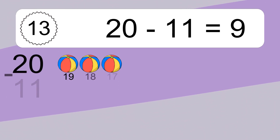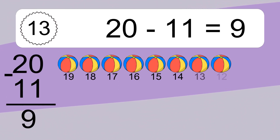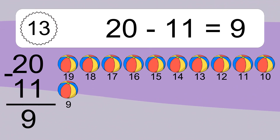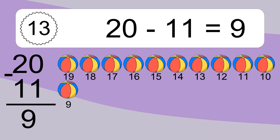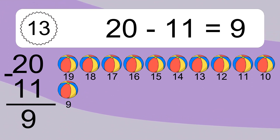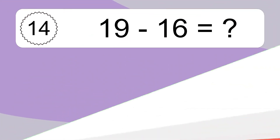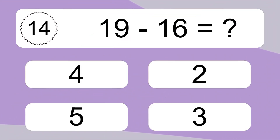20 minus 11 equals what? 20 minus 11 equals 9. Let's count it. 19, 18, 17, 16, 15, 14, 13, 12, 11, 10, 9.